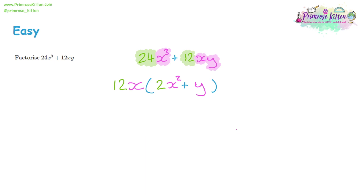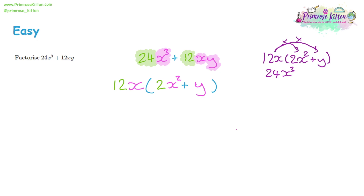The last thing to do is expand the brackets and check the answer. We have 12x times (2x² + y): 12x times 2x² gives 24x³, and 12x times y gives 12xy. We've worked backwards and got back to our question, so we know we have the correct answer.